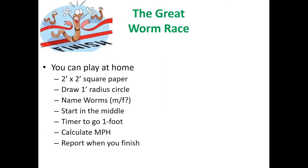Hopefully some of you have worms; if not, that's okay — I have plenty for everybody. You can root for Team USA. We need a two-by-two square foot piece of paper, and we need to draw a circle that's one foot in diameter. The honor asks you to figure out how fast a worm can travel one foot.